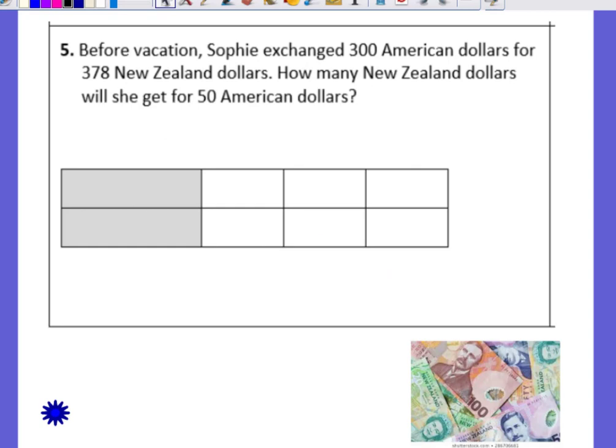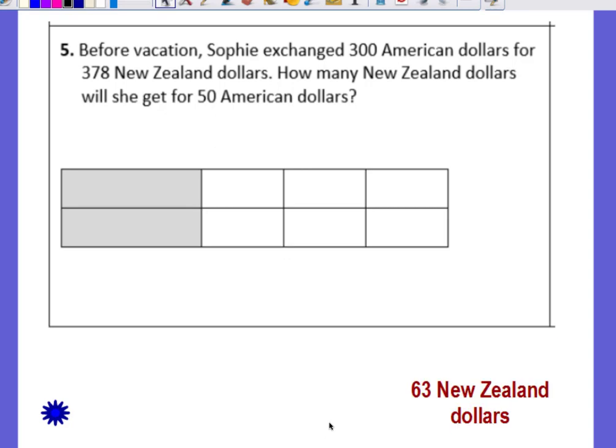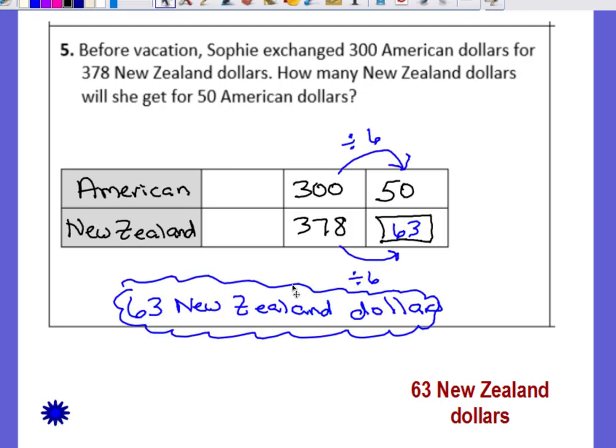Problem number five. Before vacation Sophie exchanged $300 American dollars for $378 New Zealand dollars. How many New Zealand dollars will she get for $50 American dollars? So you want to set up your ratio table. Pause the video. Solve. Come back and check. Did you get $63 New Zealand dollars? If you did, very nice job. If not, pause the video. Take a look at the work shown and see if you can find your mistake. If you have any questions ask your teacher.